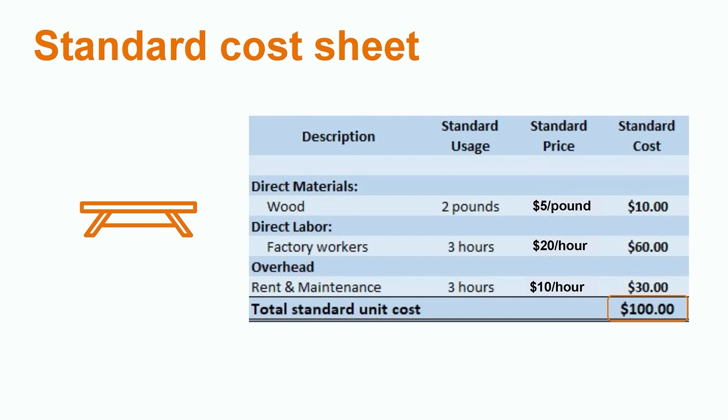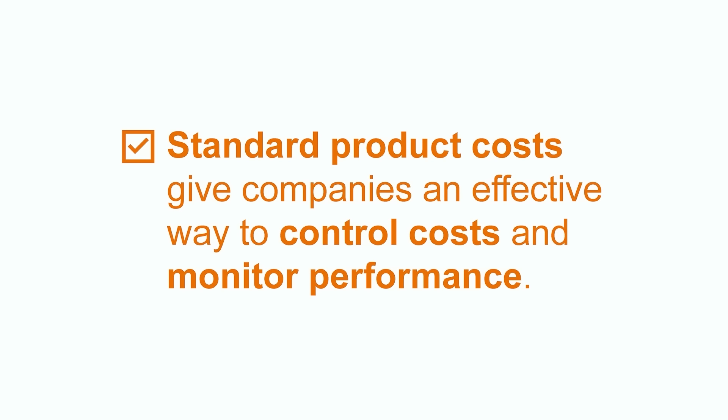Now we can add together all three manufacturing costs: $10 for direct materials, $60 for direct labor, and $30 for overhead, for a total standard unit cost of $100 for each table produced. This is the final number we're looking for, which the company can use for both planning and pricing decisions going forward. Remember, in order for organizations to be successful in the long run, they need an effective way to control their costs and subsequently monitor the company's performance. Standard product costs are an extremely useful tool that give companies the ability to do this. If you're interested in learning more about this topic or others, please feel free to check out our additional videos on many more related topics.